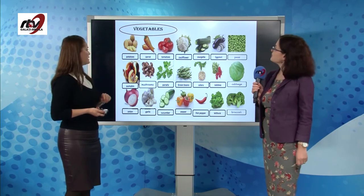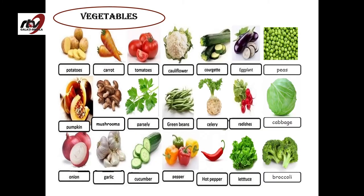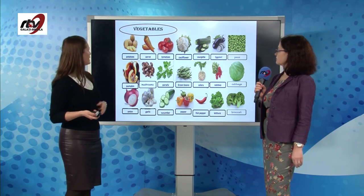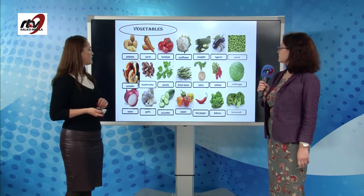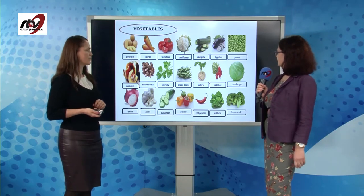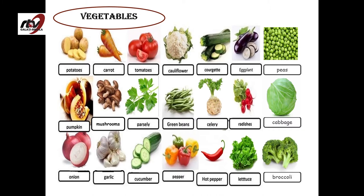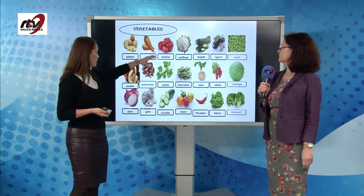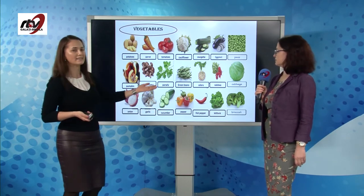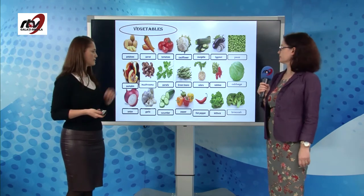Vegetables: potatoes, carrot, tomatoes, cauliflower, courgette — or maybe you know it as zucchini — eggplant, peas, pumpkin, mushrooms, which are not really vegetables, they are fungi, but I've put them here. It's easier to understand them this way. Parsley, green beans, celery, radishes, cabbage, onion, garlic, cucumber, pepper, hot pepper, lettuce and broccoli. Pay attention to lettuce — lettuce is the vegetable and we make salad from tomatoes, onion and cucumber. We can also add lettuce to salads.